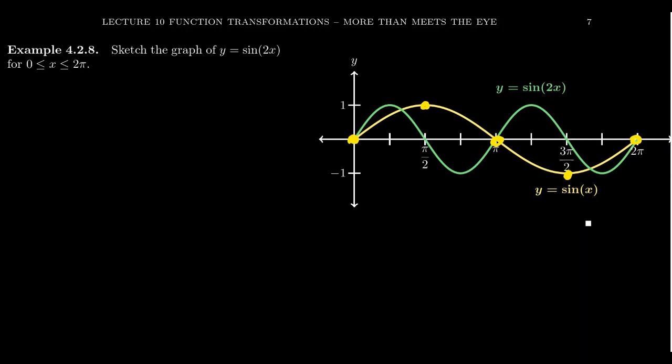So what happens when you put this 2 inside that? You're going to speed up the graph. It's going to accomplish the same work in half of the time. So basically, each of these x-coordinates is going to get cut in half.